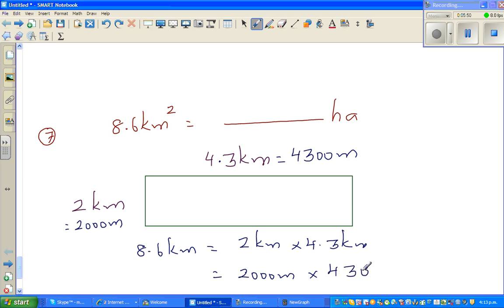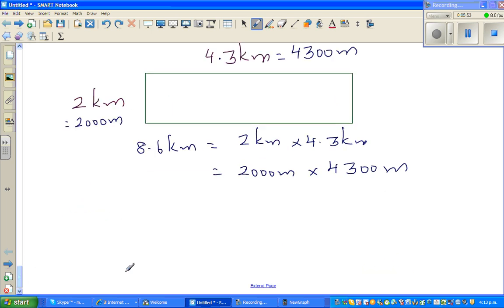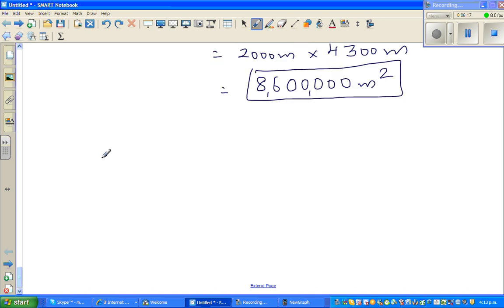So that changes to 43 times 2 is 86. You've got one, two, three, four, five zeros. So we can say this is eight million six hundred thousand meters squared. This I want to change into hectares. What do I know about meters squared and hectares? 10,000 meters squared is one hectare.